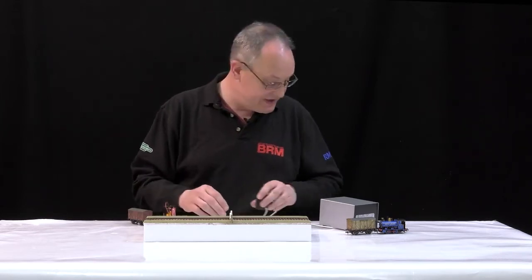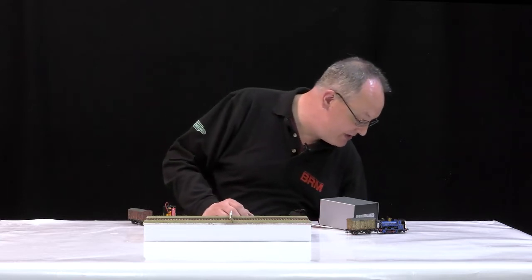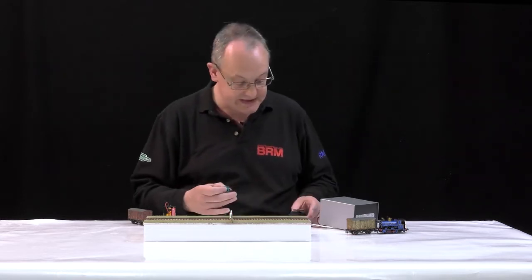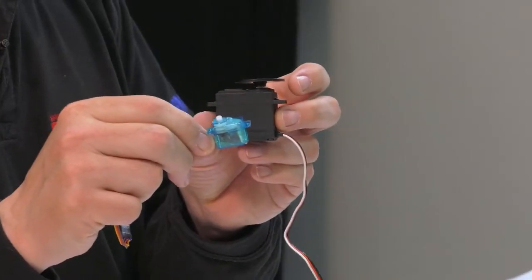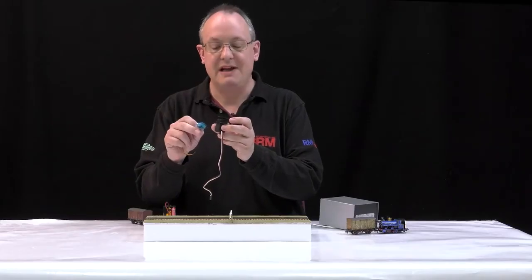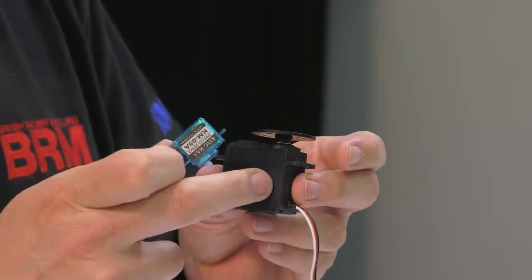There's even more to servos than this, and I should say servos come in all sorts of sizes. This is a standard servo. This is a micro servo. Standard servos are about five pounds upwards. This is actually quite a good one—it's got metal gears in.